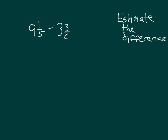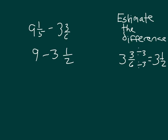Here we're asked to estimate a difference. 9 and 1 fifth is close to 9. For 3 and 3 sixths, you may recognize that 3 and 3 sixths equals 3 and 1 half — we can divide the numerator and denominator by 3. So from our benchmark fraction, we have 9 minus 3 and 1 half.